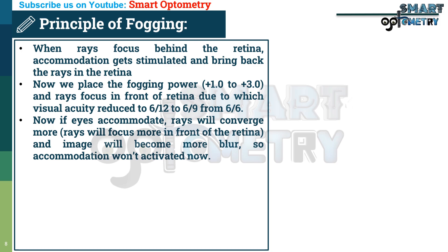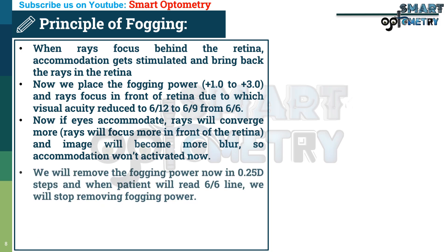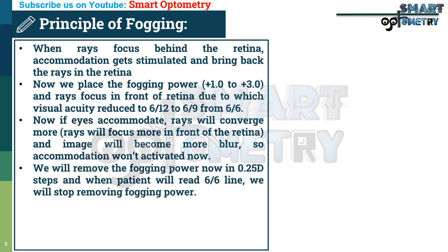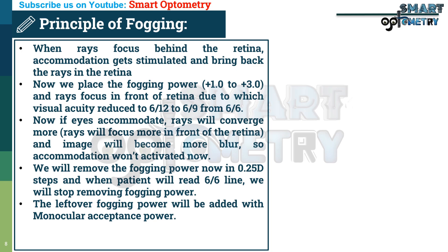Accommodation will not activate because the purpose of accommodation is to make the image clear — and accommodation only gets stimulated when rays focus behind the retina. We then remove the fogging power in 0.25 diopter steps, and when the patient can read the 6/6 line, we stop. The leftover fogging power is then added to the monocular acceptance.